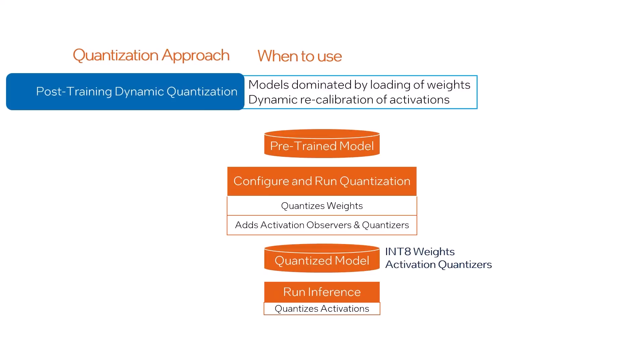There is some overhead with that dynamic conversion, plus they are written to and read from memory as FP32. This technique is good for models whose runtime is dominated by loading weights from memory, such as transformers or LSTMs with small batch size.